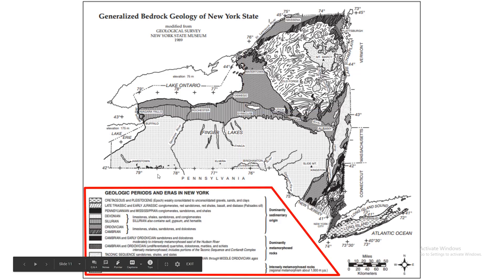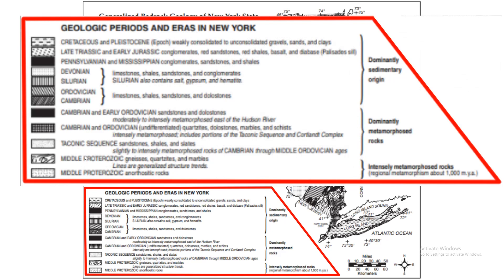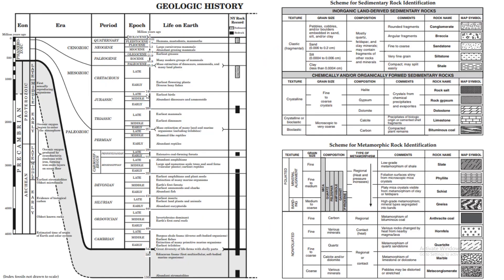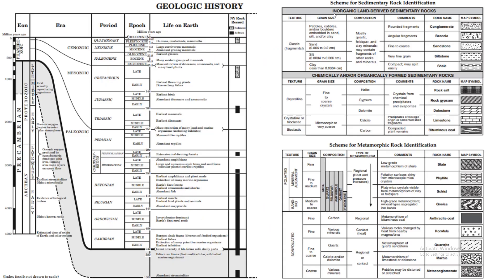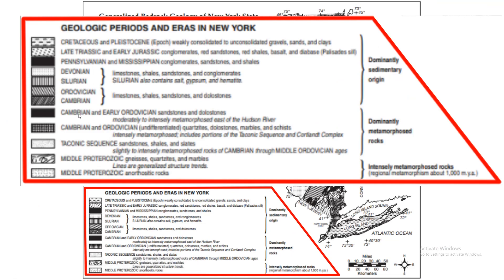That's an example for latitude and longitude. Now let's get right into the bedrock of New York State. Here we have the periods, the rocks, and the origin of these rocks. It's a combination of two reference table sections — the geologic period or the time it was formed, and the type of rock. For example, Cambrian and early Ordovician division: sandstone and dolostone, which is part of the dominantly metamorphosed rocks. These three symbols line up into dominantly metamorphosed; right here are dominantly sedimentary; and these are dominantly intensely metamorphosed.